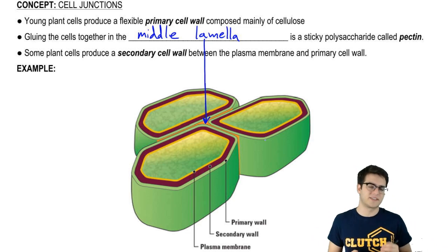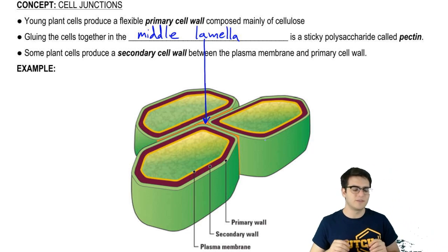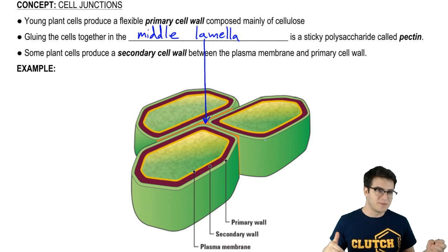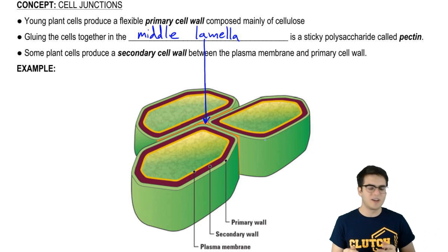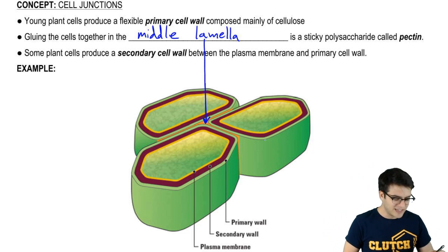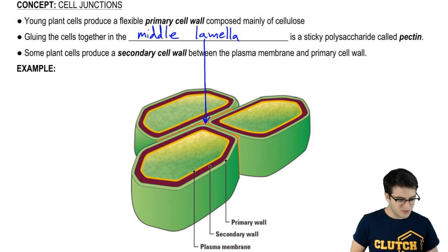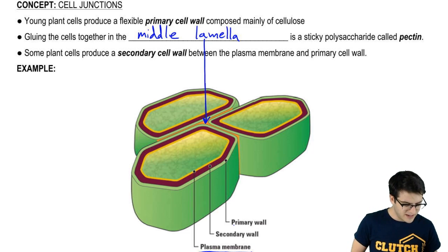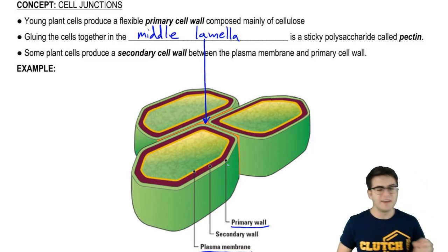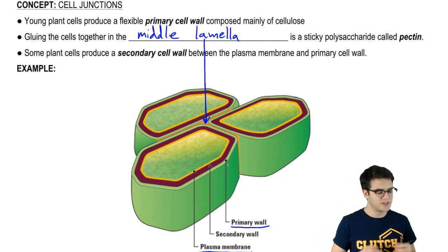Now, some plant cells, as they mature, they actually develop a secondary cell wall. And maybe kind of surprising, the secondary cell wall is actually not external to the primary one. It's actually located between the plasma membrane and the primary cell wall. So it's right in the middle there. And not every plant cell develops a secondary cell wall, just some.